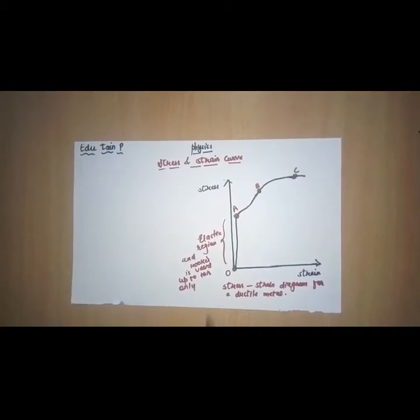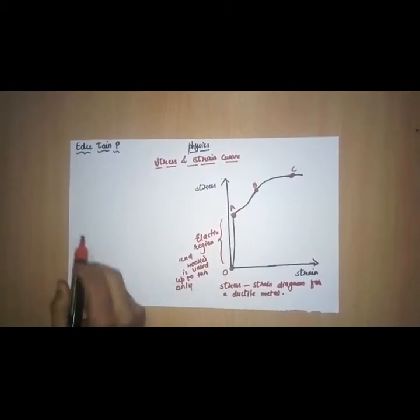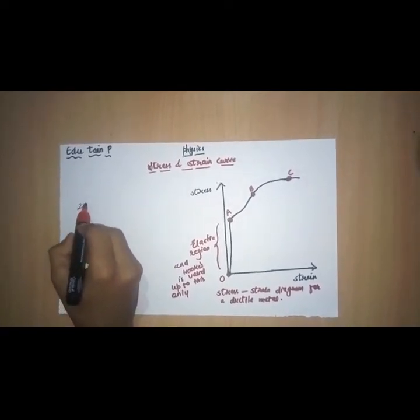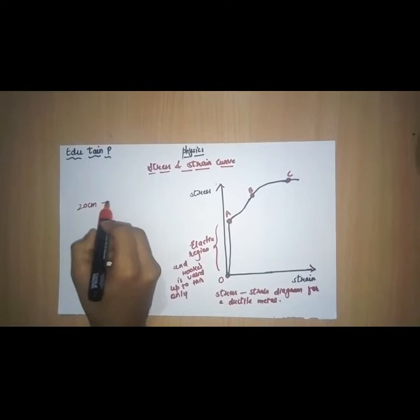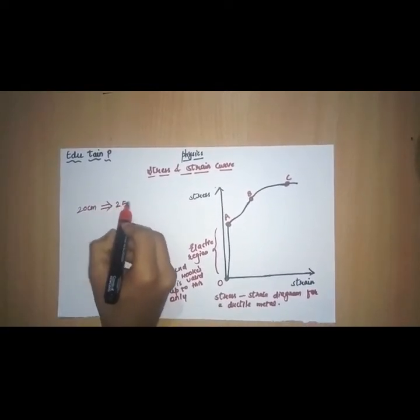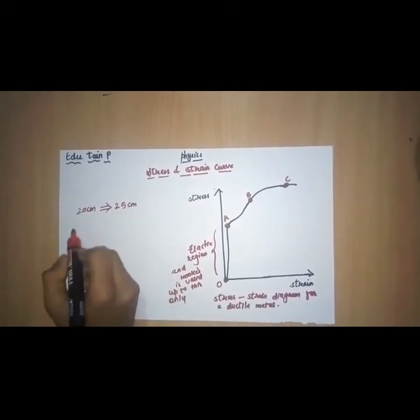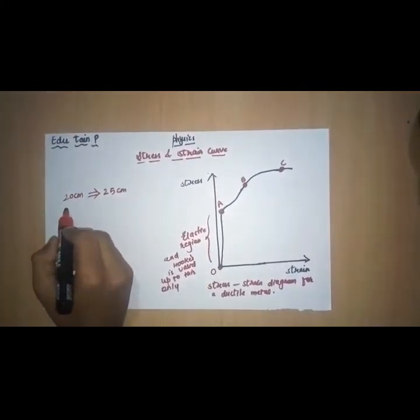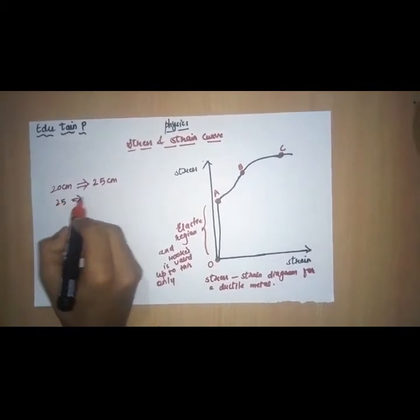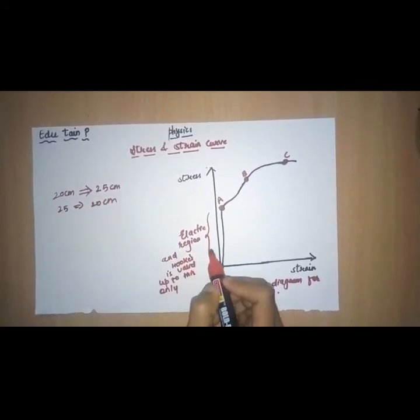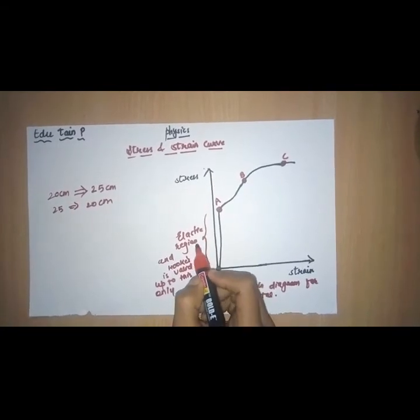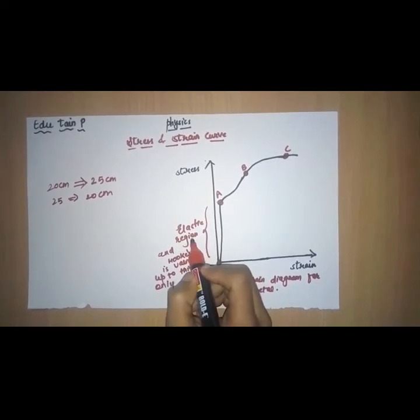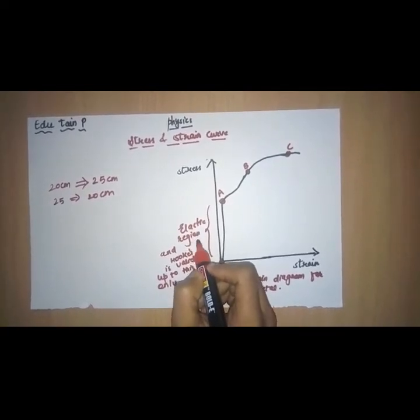So, what do you mean by elastic region? Suppose, we stretch a copper wire which is of 20 cm and we stretch it up to 25 cm. After some time, the copper wire regains its original length, that is from 25 cm to 20 cm. And this behavior of the wire is known as elastic behavior. And the region which is showing that elastic behavior is known as elastic region.